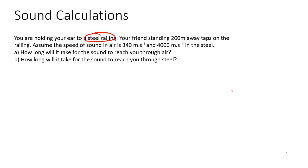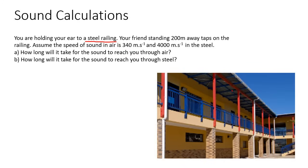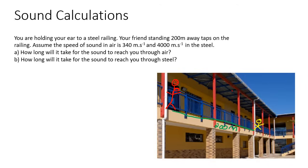This question is pretty interesting. You are holding your ear to a steel railing. You have a friend who is standing 200 meters away. Assume that the speed of sound in air is 340 meters per second and it's 4,000 meters per second in steel. Because something interesting is going to happen — your friend taps on the railing.